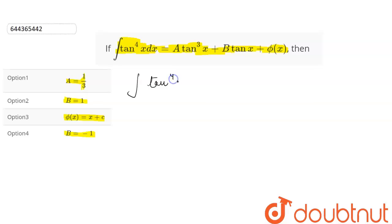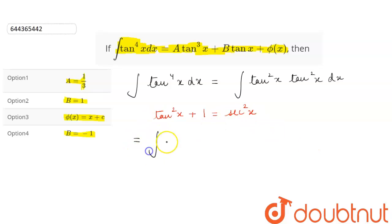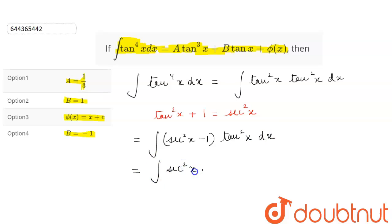Integration of tan to the power 4 dx can be written as tan square x into tan square x dx. We have the identity: tan square x plus 1 is equal to secant square x. So we can substitute tan square x as secant square x minus 1, keeping tan square x as it is. Expanding, we get secant square x tan square x minus tan square x dx.